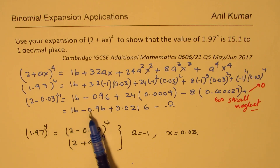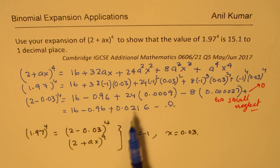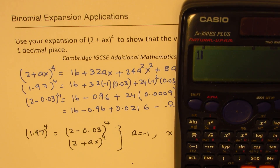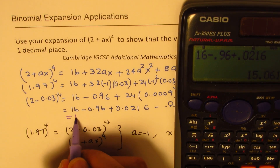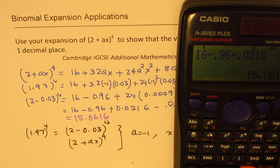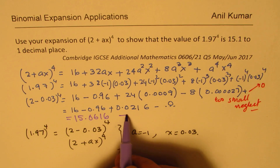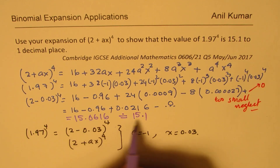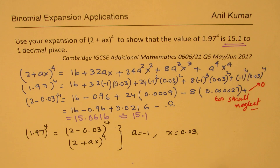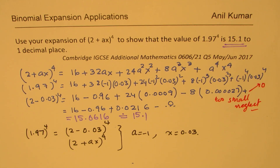So we have 16 − 0.96 + 0.0216 = 15.0616. Rounding to one decimal place, the 0.06 rounds up, giving 15.1. That is the desired result. I hope this really helps — feel free to write a comment, share your views, and if you like and subscribe to my videos, that would be great. Thanks for watching and all the best.